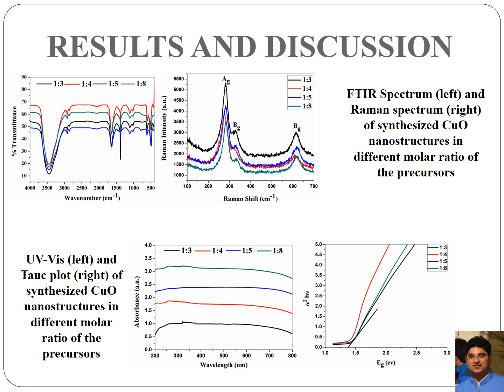Next, UV-visible spectroscopy of the copper oxide nanostructures was done and the corresponding Tauc plot was plotted to find the band gap. A broad hump between 800 and 200 nm for each of the copper oxide nanostructures confirmed their presence. When the band gap was evaluated, it was found to be around 1.35 eV.